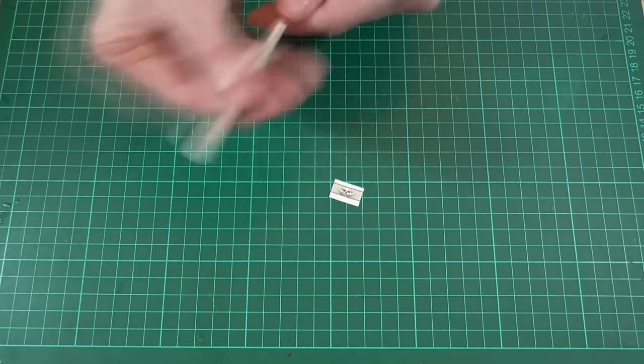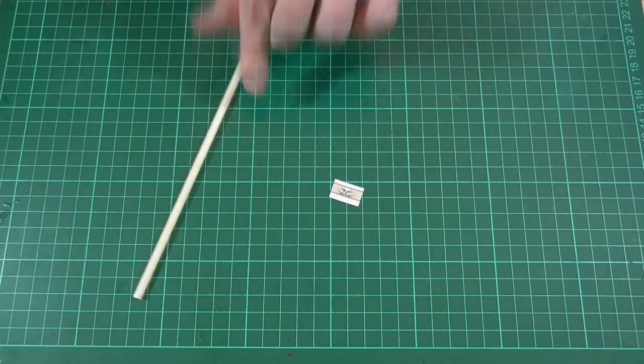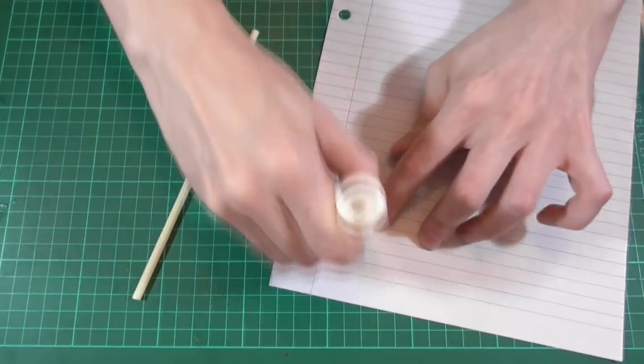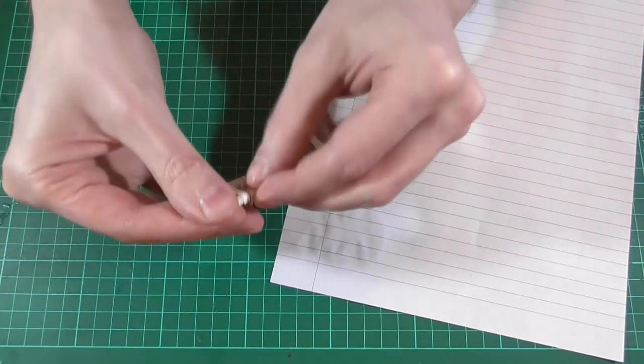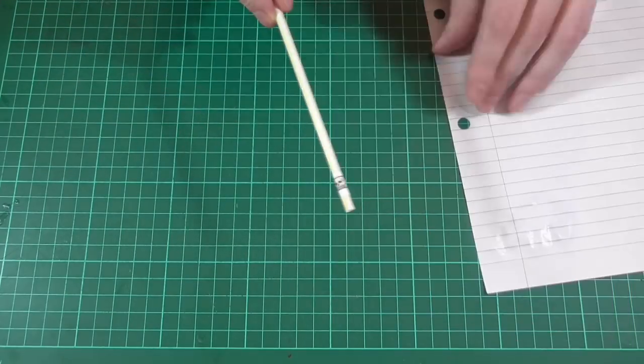Next we'll take a regular size drinking straw and just rough up the surface with a piece of sandpaper. Then we can apply some glue to the back of the skull texture and simply wrap it around the straw. And there we go.